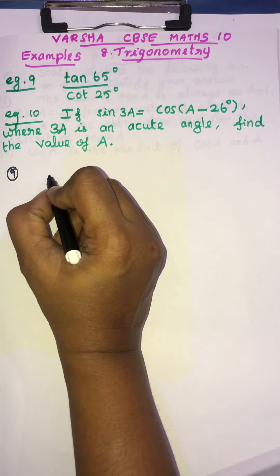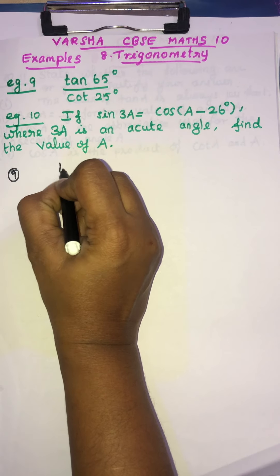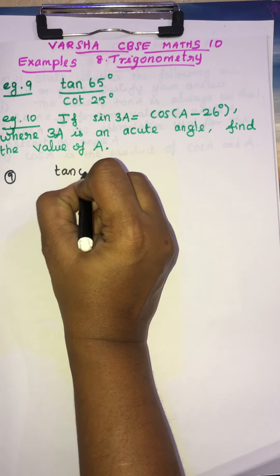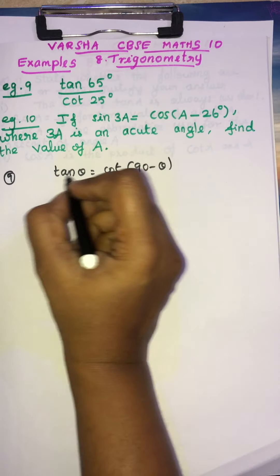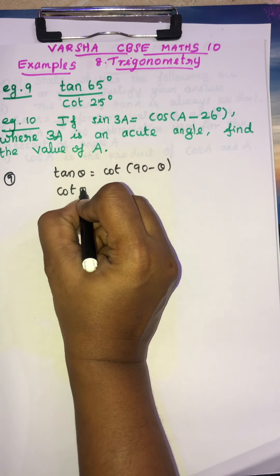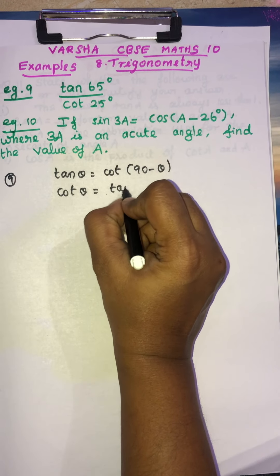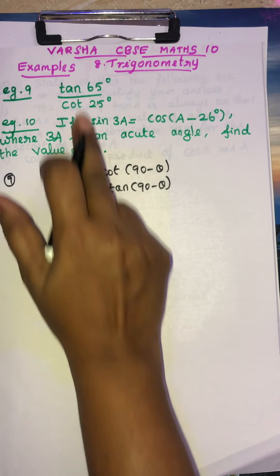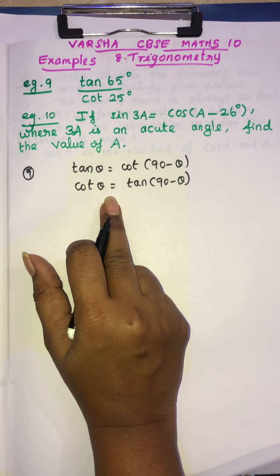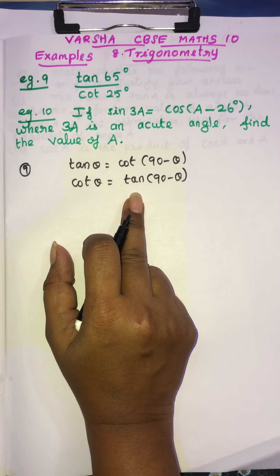Before that we have to recall the formula. So what is the first formula? For tan theta is equal to cot 90 minus theta. Then cot theta is equal to tan 90 minus theta. So in this formula we are going to, in this sum we are going to do the formula.